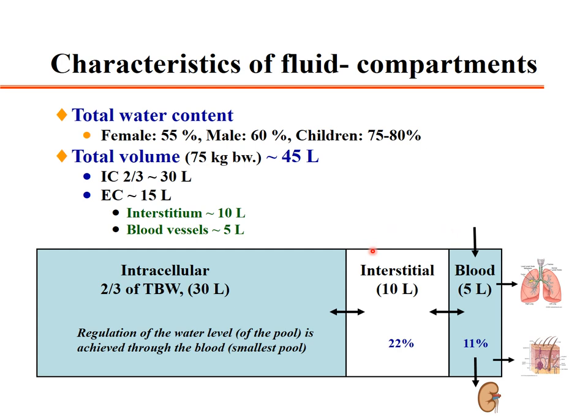All water content is regulated by blood volume or plasma volume. The difference between extracellular and intracellular spaces in terms of ion distribution is that intracellular spaces have less sodium and more potassium, while extracellular spaces have more sodium and less potassium.